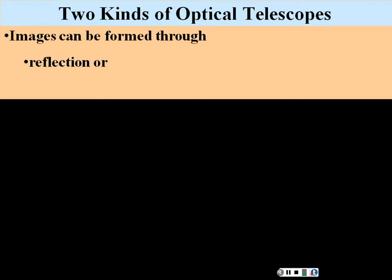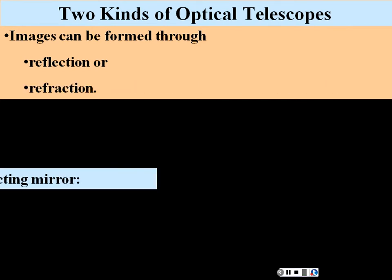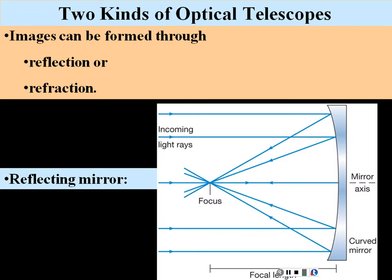We can get two kinds of optical telescopes: one by reflection and the other by refraction. Here's how reflection works. To the right, we have a curved mirror — a parabolic curve, very close to being circular. When light rays come in and bounce off this mirror, they bounce off with an angle equal to their angle of incidence — the angle that comes in equals the angle that goes out.